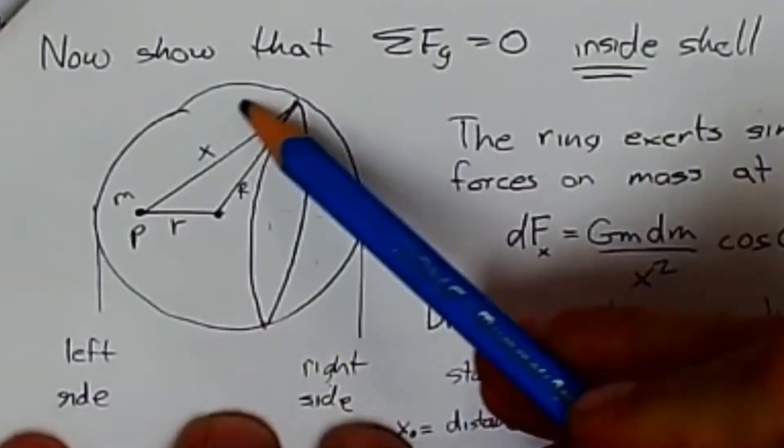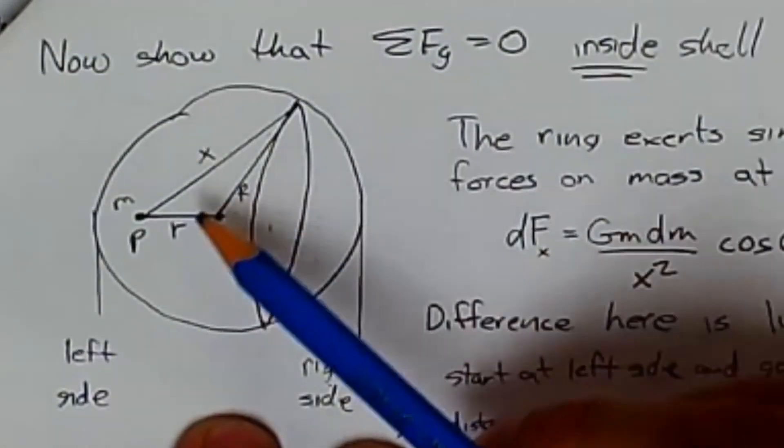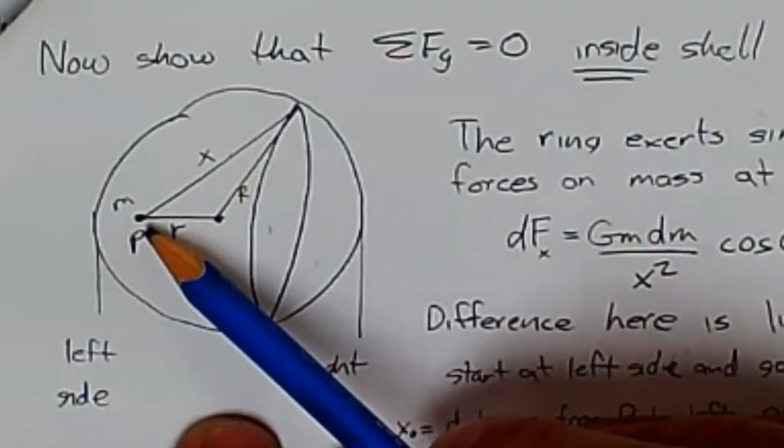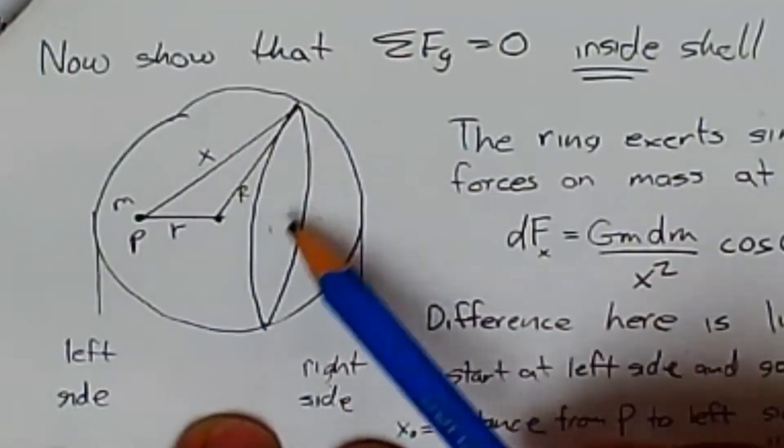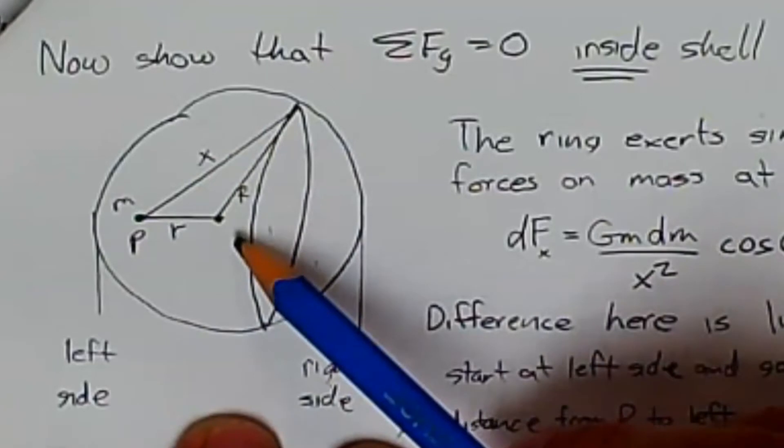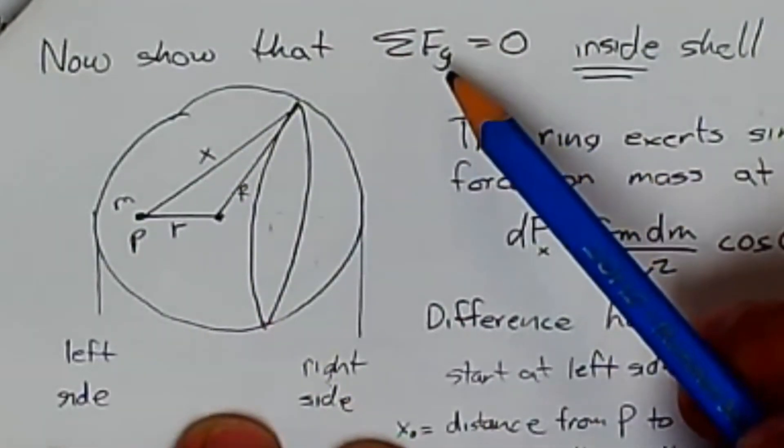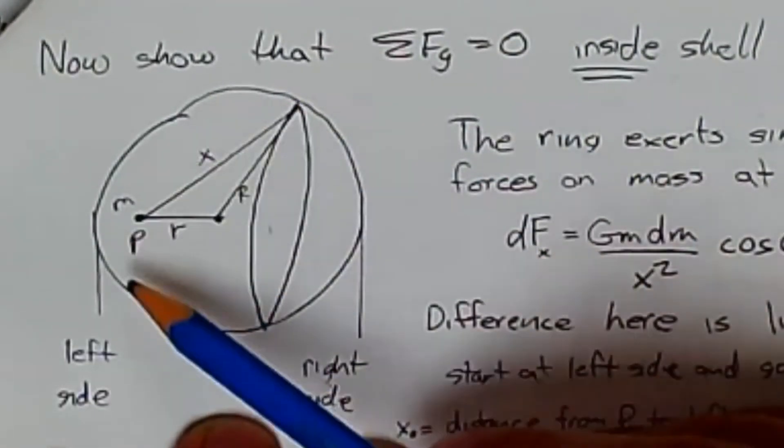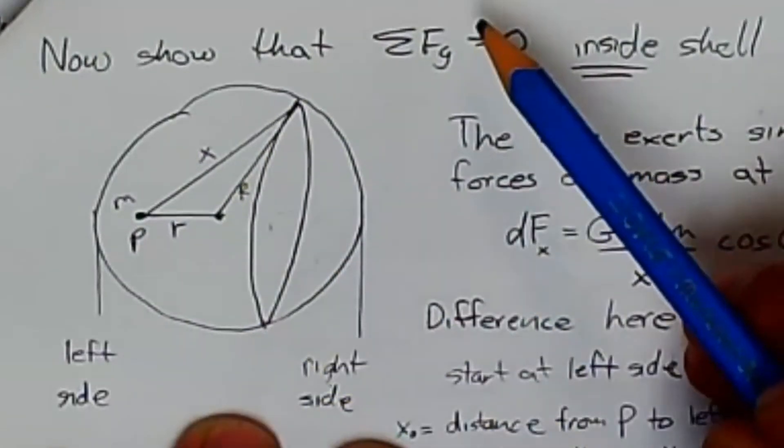So here we have a shell of mass, and we pick a point, some random location inside the shell. It doesn't matter where inside the shell we choose, the sum of the forces of gravity from all this mass that surround little m add to zero.